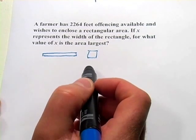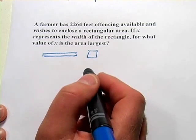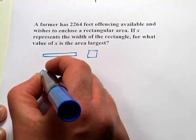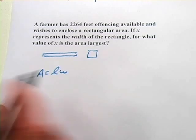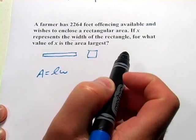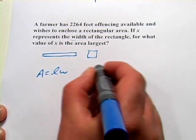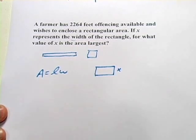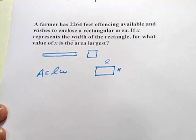To set this one up, we need to make the quadratic equation. What we're trying to make is an equation for area. Area equals length times width. We're told here that x represents the width of the rectangle. So let's draw another rectangle. If x is the width, what is the length in terms of x?